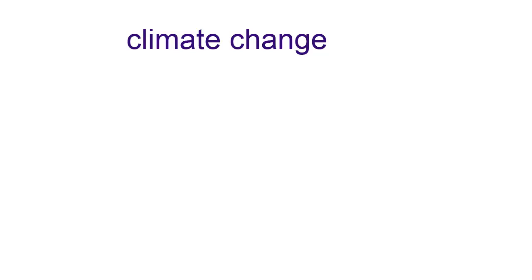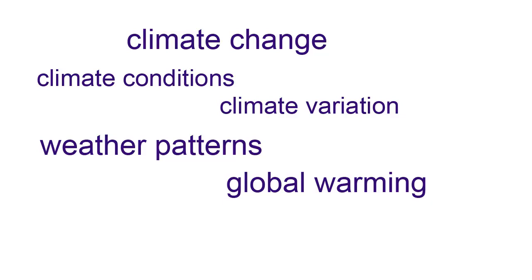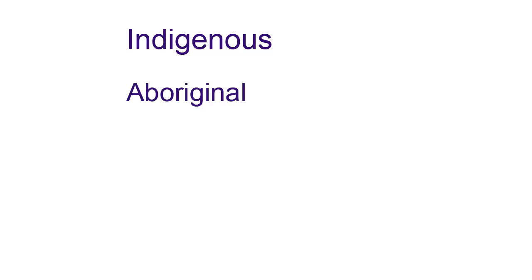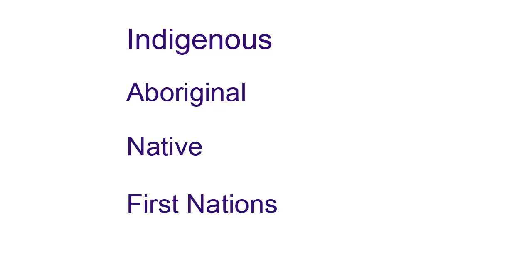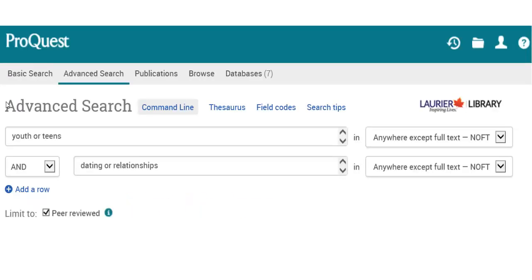For example, if your topic relates to climate change, think about different ways people may refer to that concept. There are many variations, including weather patterns and global warming. Some topics have terminology that has changed over time or is different in different places. For example, if you're looking for sources related to Indigenous topics, you need to be aware that scholars may have used terms like Aboriginal, Native, or First Nations. When you're searching, make sure you use all the variations and terms you can think of to avoid missing important research.